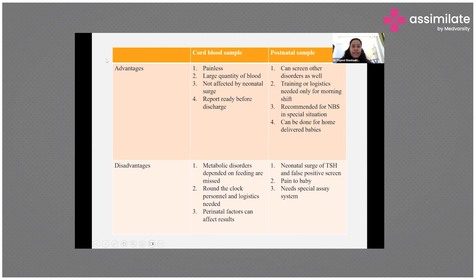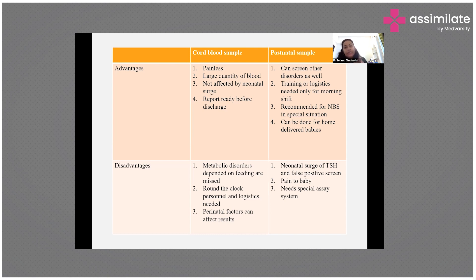Newborn screening for hypothyroidism can use either cord blood or postnatal samples. Cord blood advantages: painless, adequate quantity, not affected by the TSH surge in the first 24–48 hours, and report is available before discharge. However, it requires round-the-clock trained personnel and may miss metabolic disorders that require feeding to be detected.